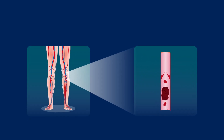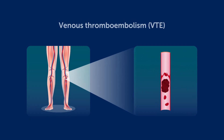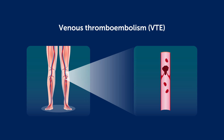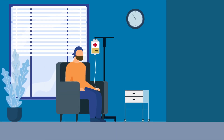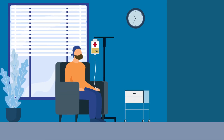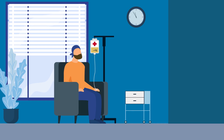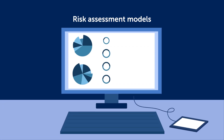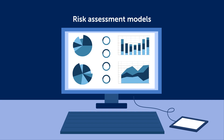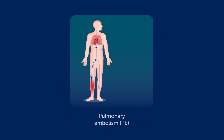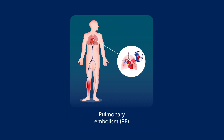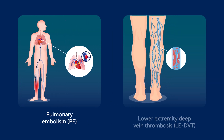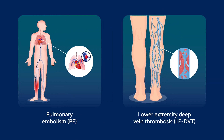Severe blood clots such as venous thromboembolisms or VTEs can cause complications and even death in patients undergoing systemic cancer therapy. Risk assessment models can be used to identify which patients may develop blood clots, especially pulmonary embolisms or PE and lower extremity deep vein thrombosis or LEDVT.